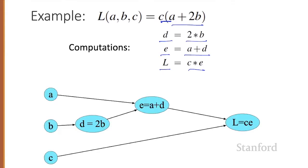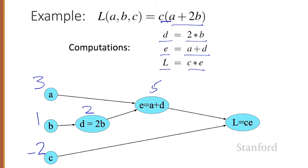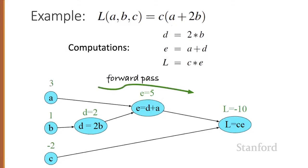The simplest use of computation graphs is to compute the value of a function with some given inputs. Let's assume we have inputs A equals three, B equals one, and C equals minus two. We can then walk forward and compute a value for D as two times B, so that's two. Then a value for E as A plus D, so that's five. And then a value for L as five times minus two, which equals minus ten.